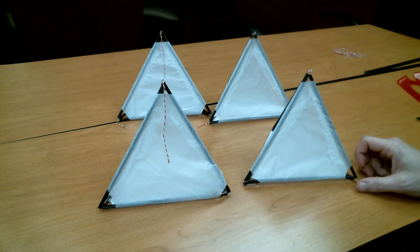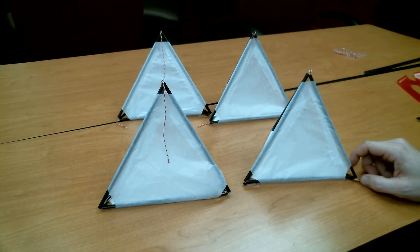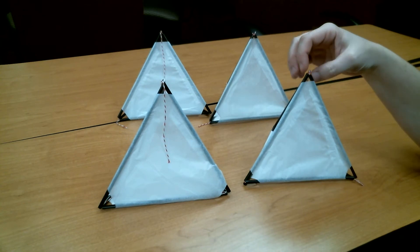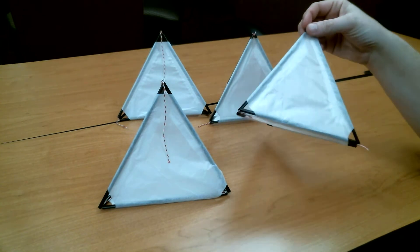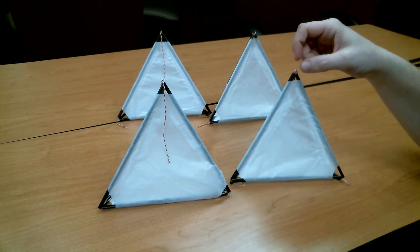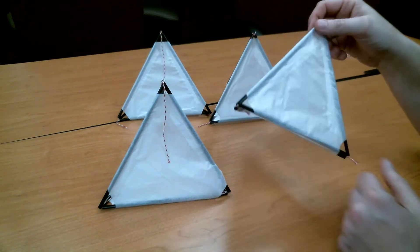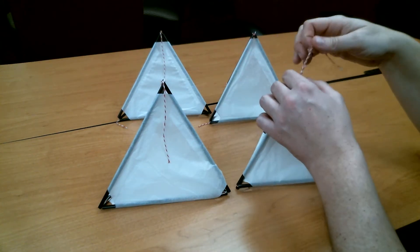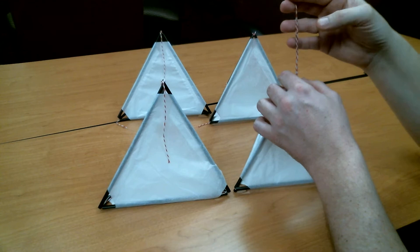All right everybody, we are back for the third video in our Marshall Putnam 4-H tetrahedron kite series. At this point, if you followed all the instructions, you should have four identical tetrahedrons all with your tissue paper skin on them and all of them with some strings hanging out at least the top point.